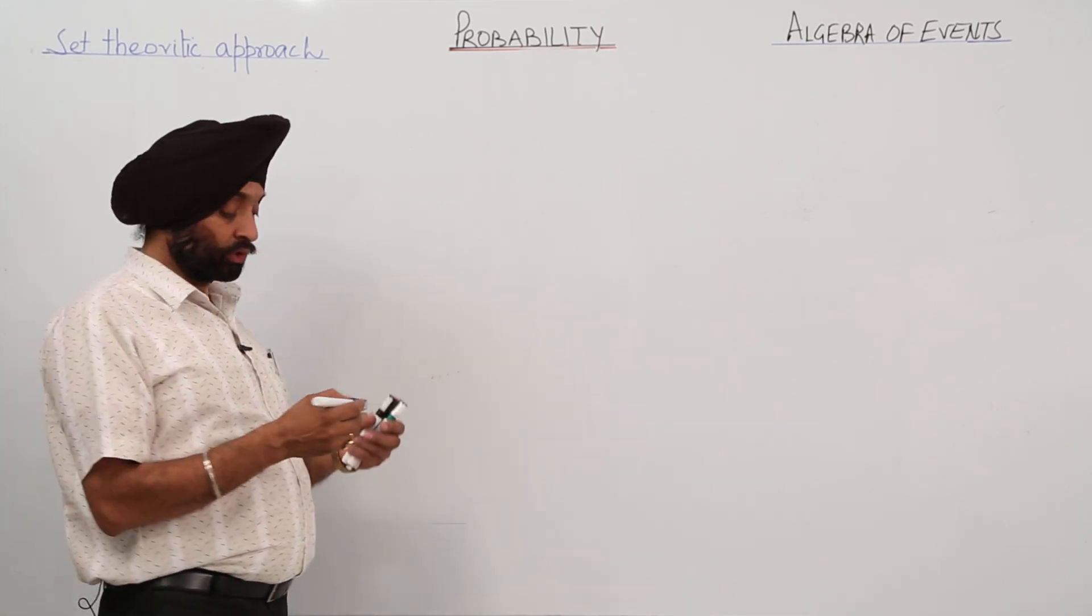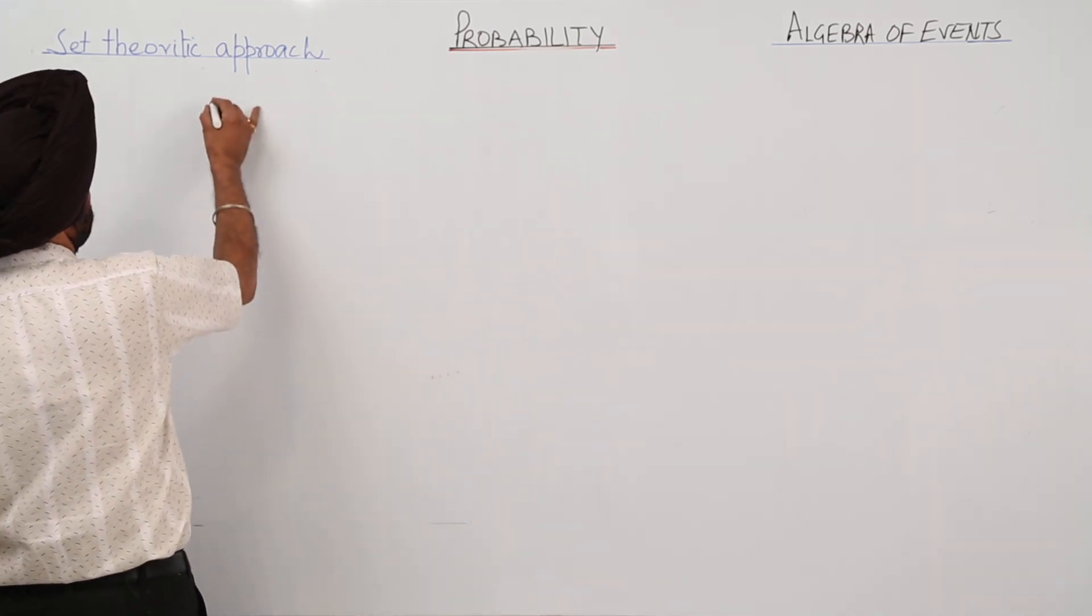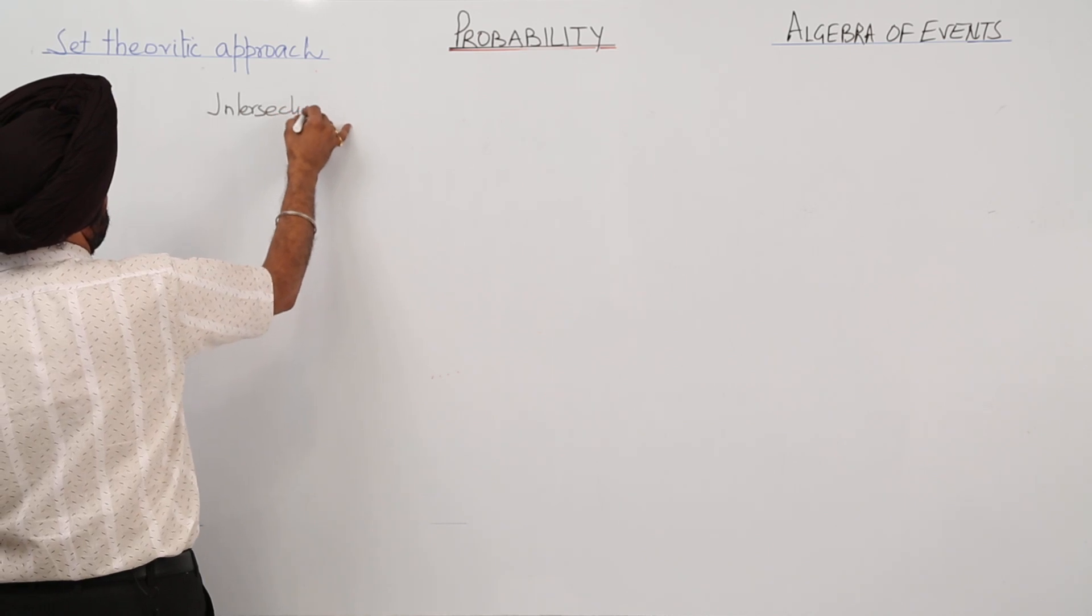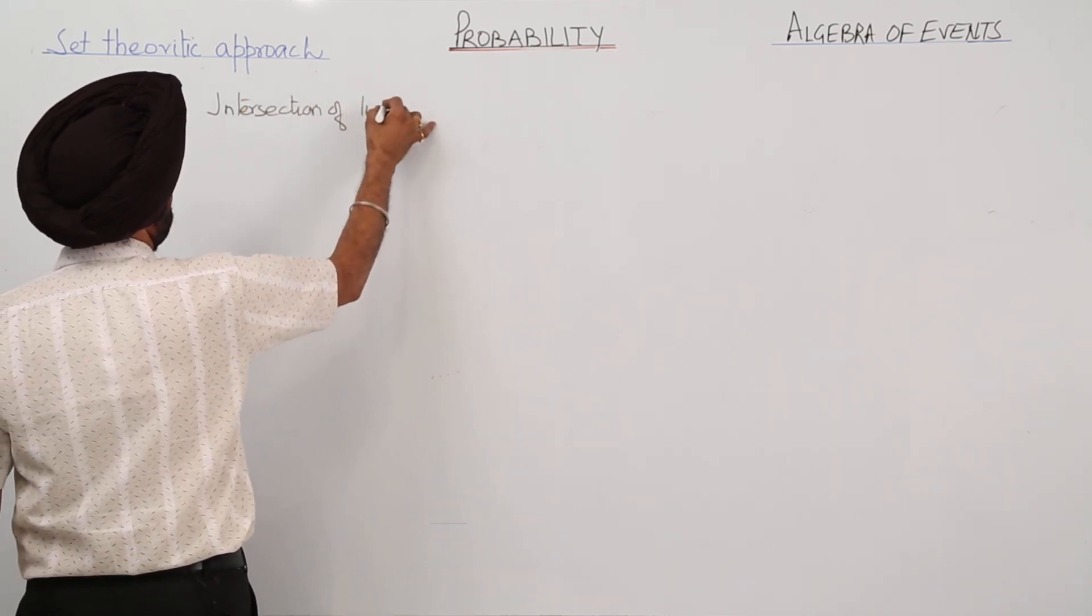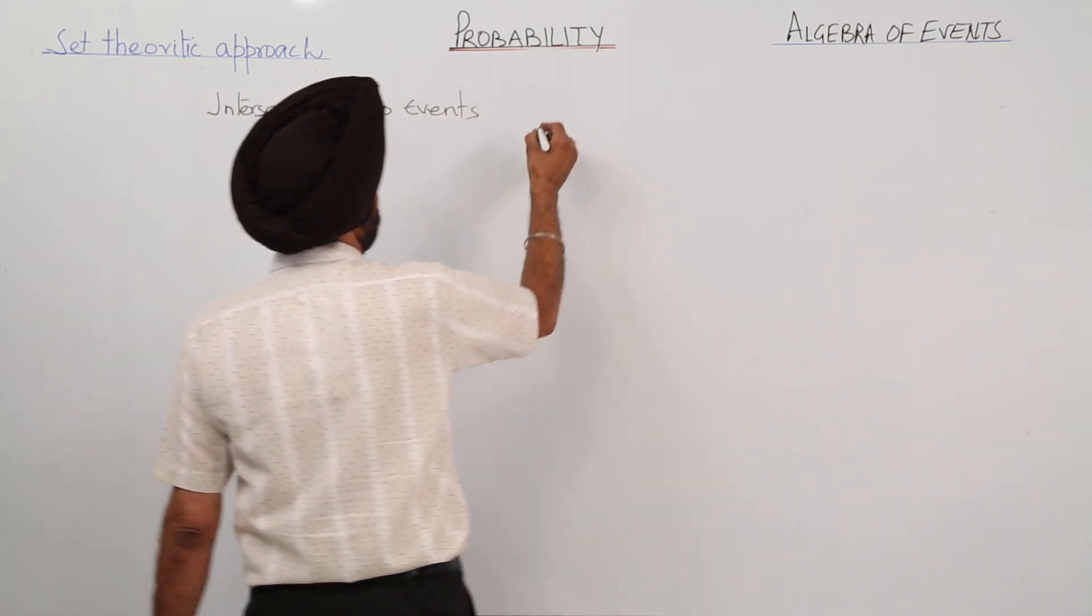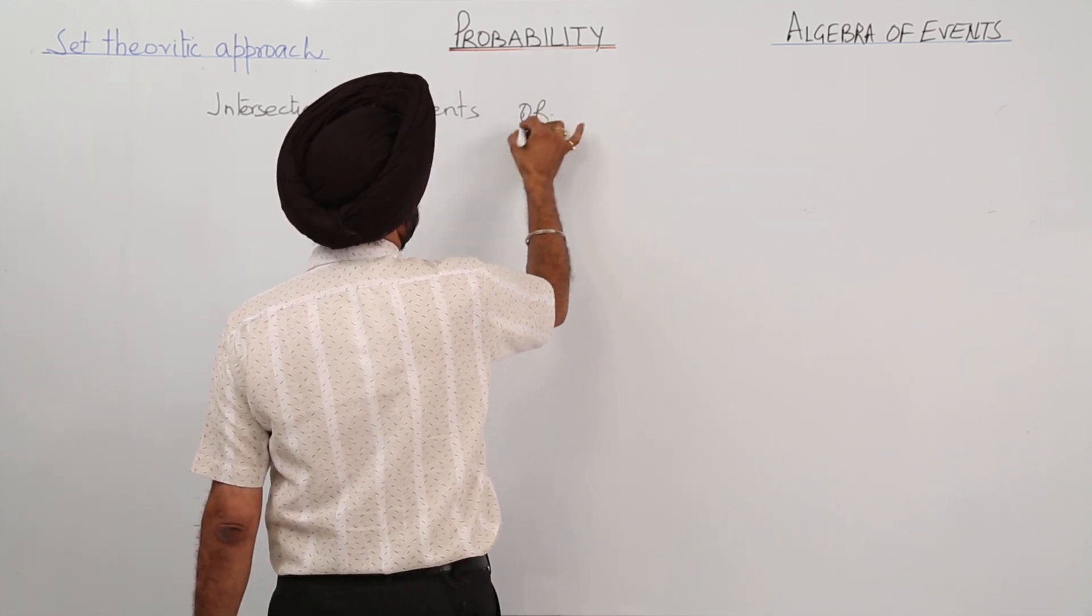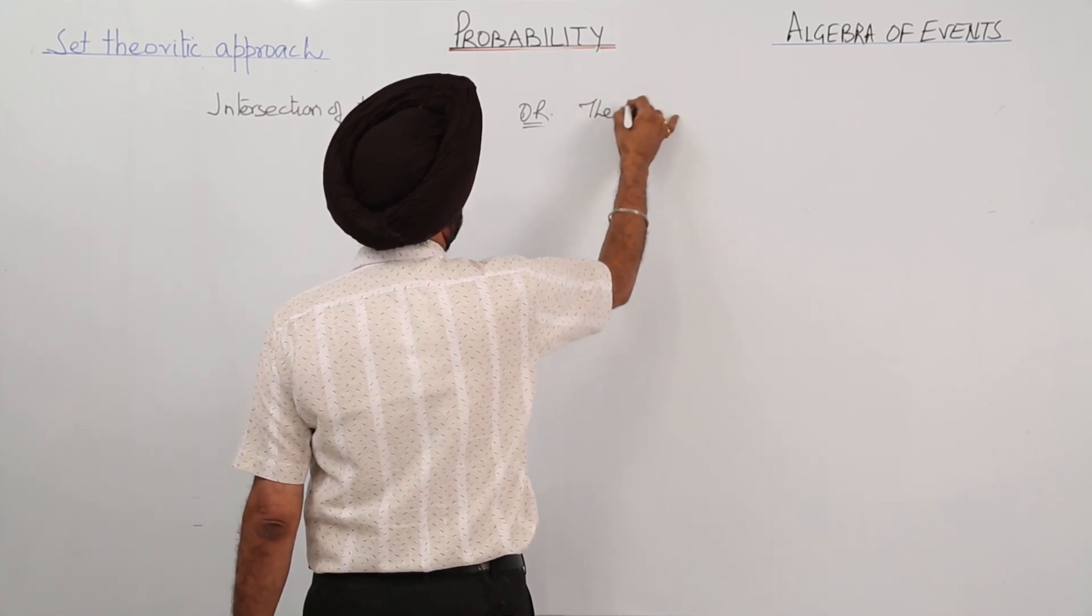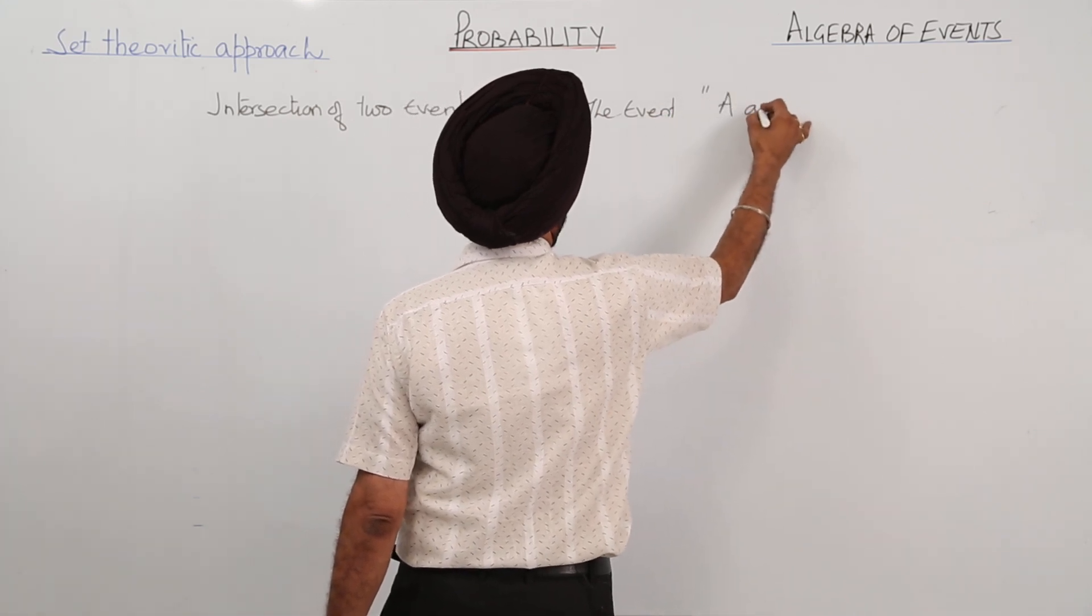Intersection of two events. This is called, or we can write it as, the event A and B.